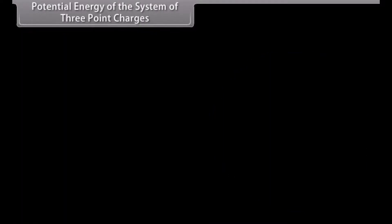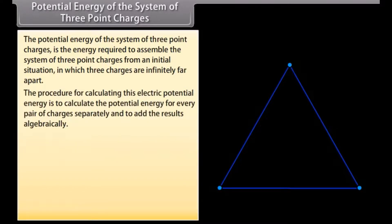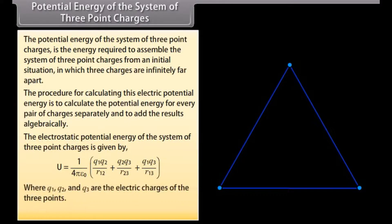Potential energy of the system of three point charges: The potential energy is the energy required to assemble the system from an initial situation where three charges are infinitely far apart. The procedure is to calculate the potential energy for every pair of charges separately and add the results algebraically. The electrostatic potential energy is given by U equals one upon four pi epsilon naught multiplied by Q1 Q2 upon R12 plus Q2 Q3 upon R23 plus Q1 Q3 upon R13, where Q1, Q2, and Q3 are the electric charges and R12, R13, and R23 are their separation distances.